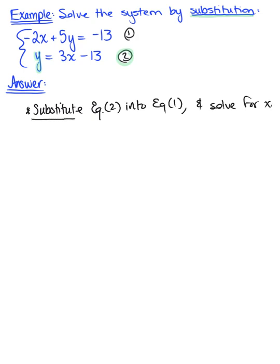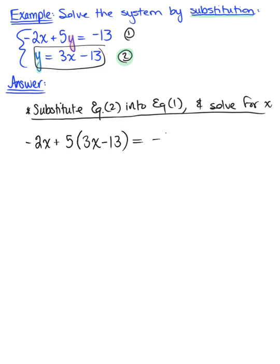In other words, I am replacing the y value of equation one with equation two. So equation one becomes negative 2x plus 5, and I'm replacing that y with equation two. That's 5 multiplied by 3x minus 13 equals negative 13.